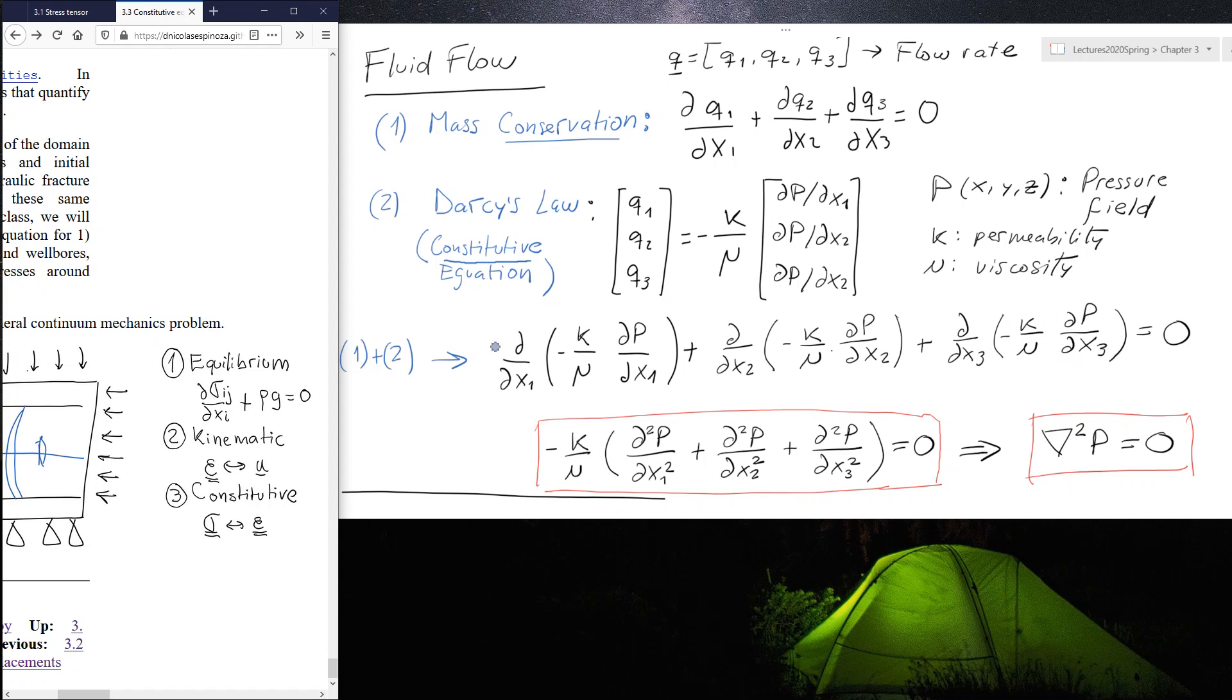I get to this equation I have right here. And if I further consider that permeability and viscosity are constant throughout the space, I can take this out of this derivative. And further, now I can take the derivative two times, and that's going to be a second derivative. And this is the equation I'm going to get.